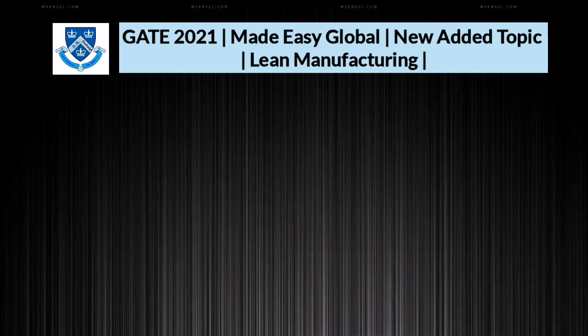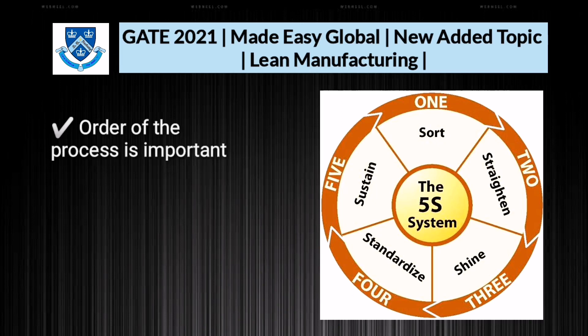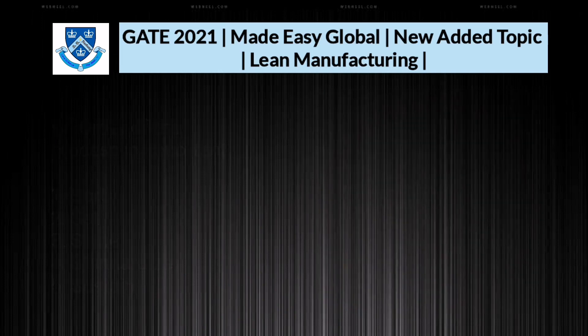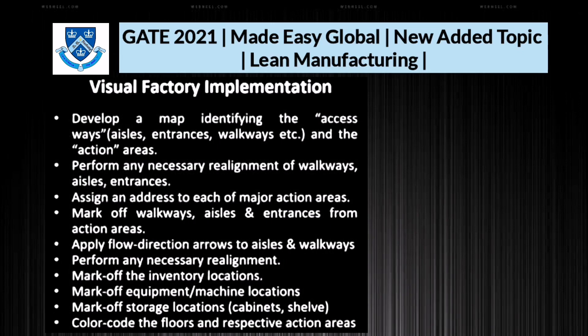The next topic is the 5S technique. The five steps are: Sort, Set, Shine, Standardize, and Sustain. You need to remember the order, as exam questions may ask which step is third, for example. Next is visual factory implementation, which involves identifying the map of the company, realigning workways, and assigning addresses to major action areas.